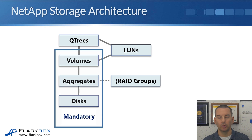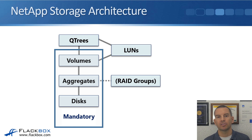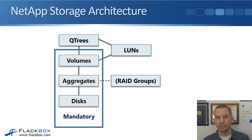Looking at those components: the mandatory ones are disks, aggregates, and volumes — the lowest level a client can access its data is at the volume level, volumes go into aggregates, and aggregates are collections of disks. Qtrees are an optional feature that go into a volume and are typically used to configure a quota. LUNs are mandatory if you're using SAN but are not used at all when using a NAS protocol.